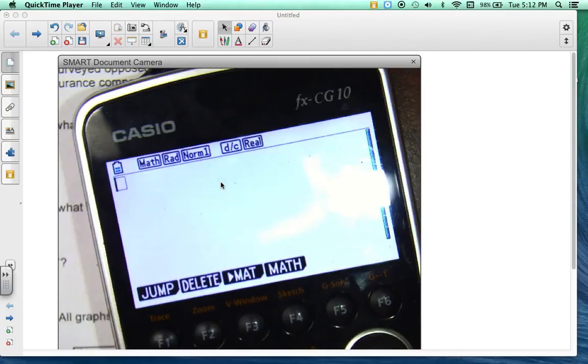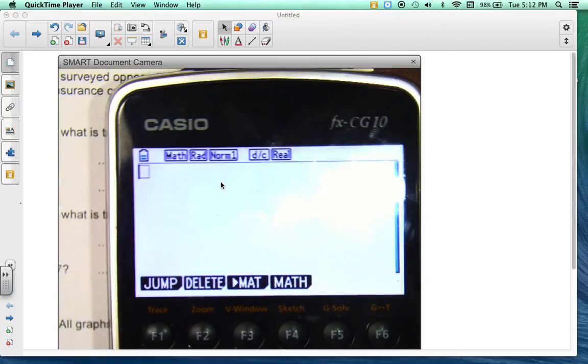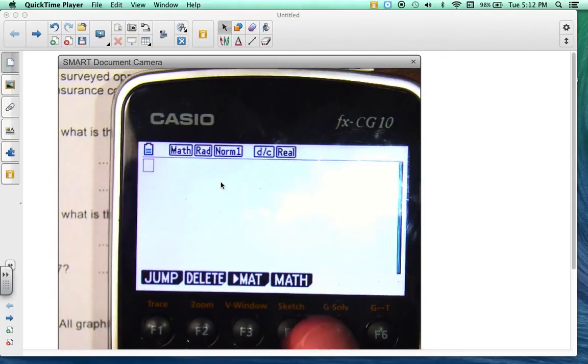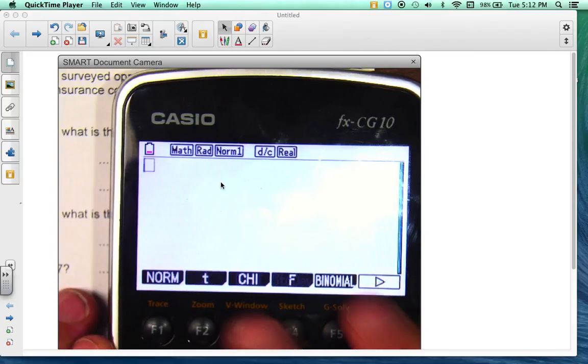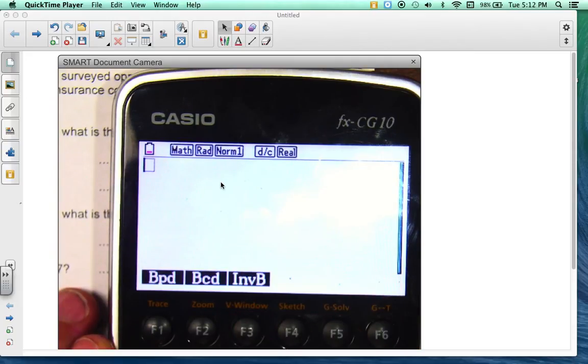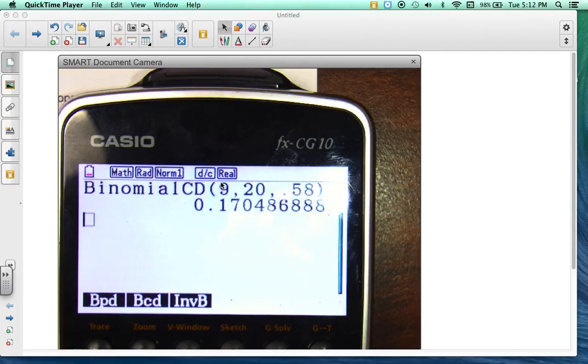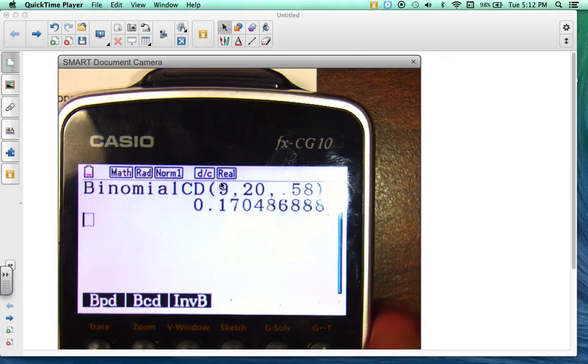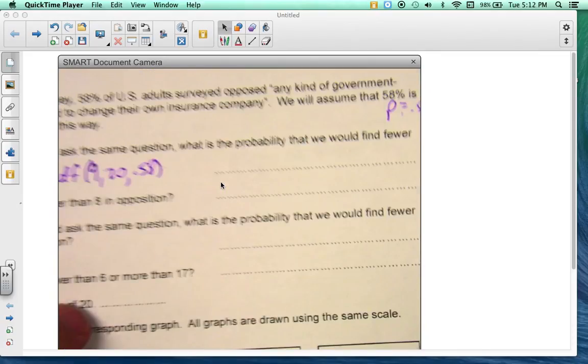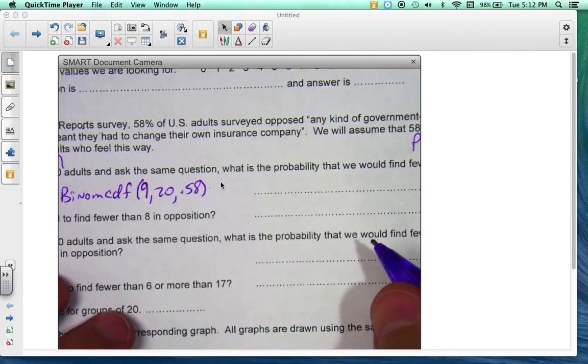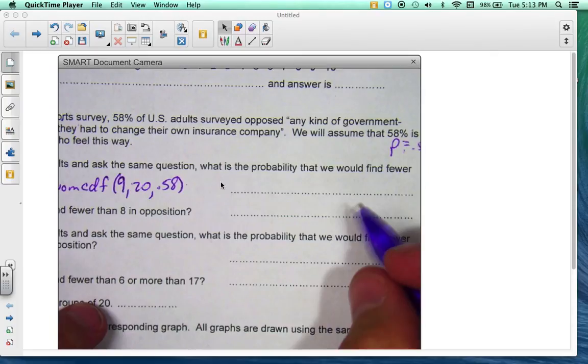So what that would look like in the calculator would be, let's go to Option, Stat, Distribution, Binomial, Binomial CDF, 9, 20, 0.58, enter, 0.1705. So if y'all can see that, I'll make it 0.1705.